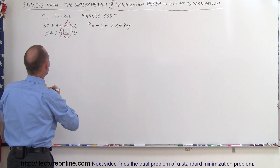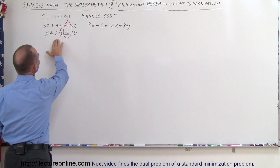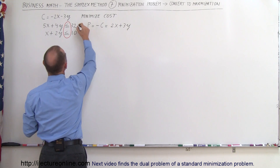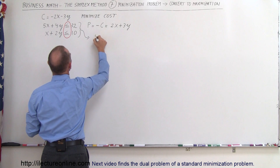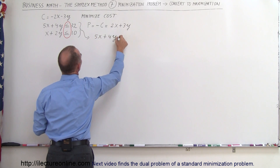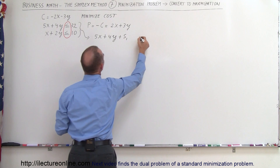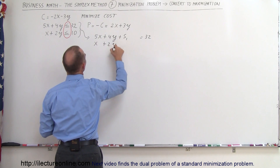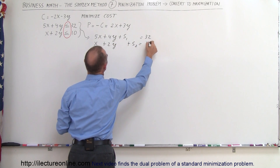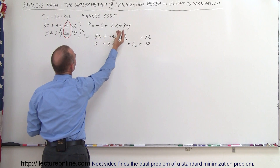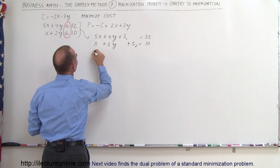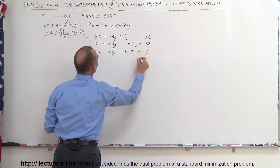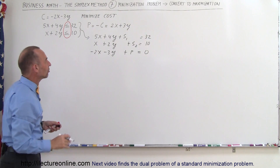We're now going to put this into simplex tableau form. Notice that we need to write this into equivalent equations with what we call the slack variables. So these two constraint equations will become as follows: 5x plus 4y plus the first slack variable equals 32, and x plus 2y plus the second slack variable equals 10. Then if we take our profit equation and move everything over to the other side, we get minus 2x minus 3y plus p equals 0.